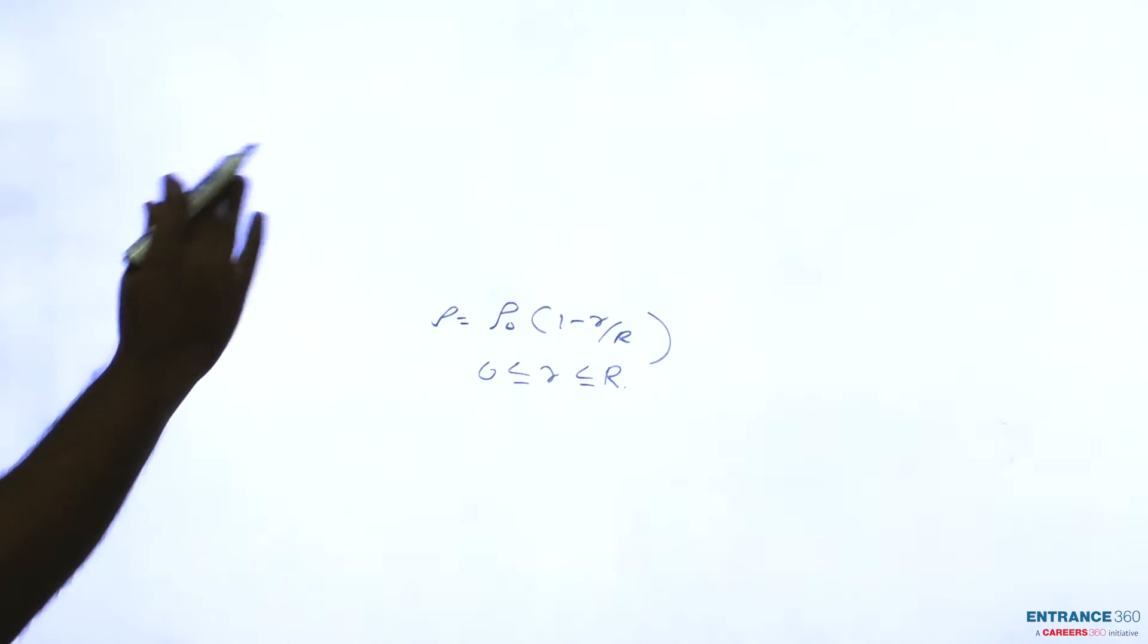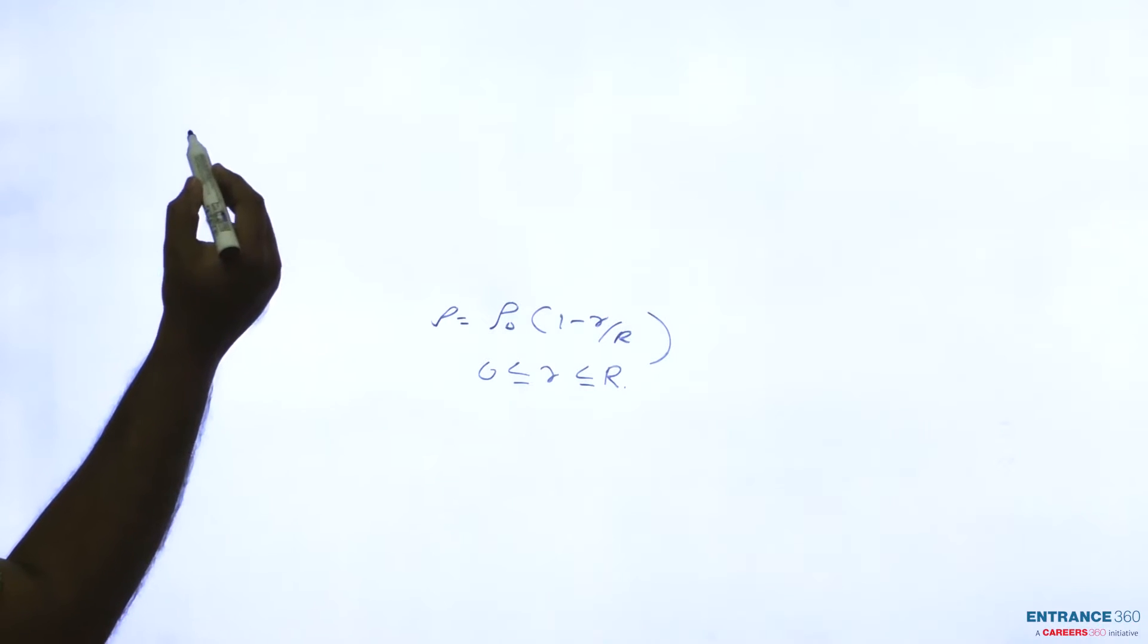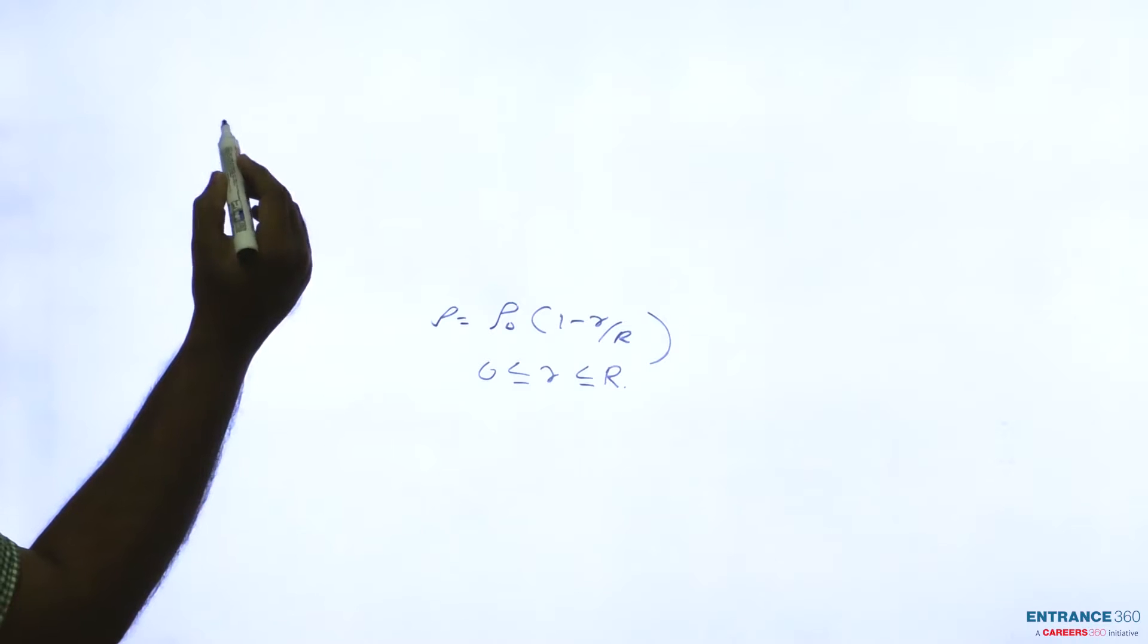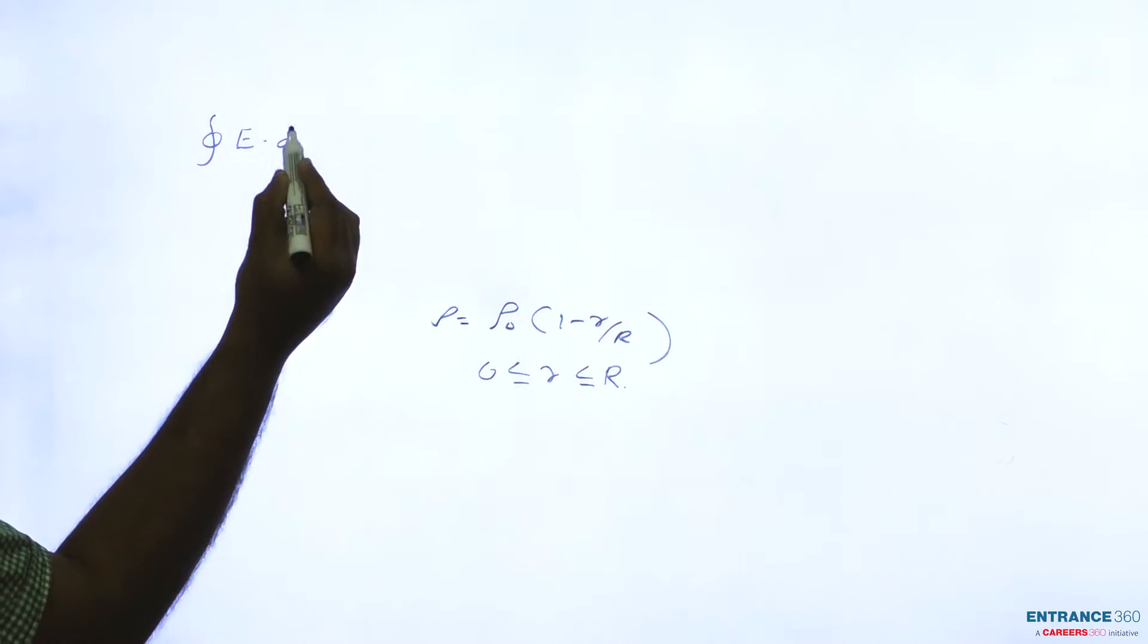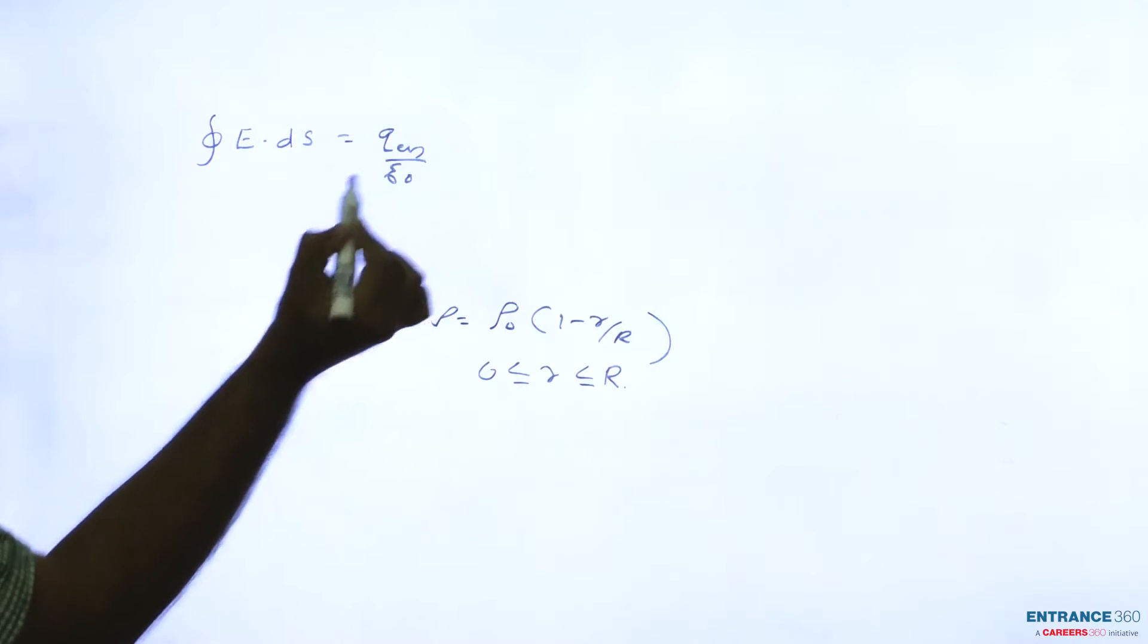To find the value of electric field we can use Gauss's Law. Gauss's Law says that flux phi equals surface integral of E dot dS, which equals q enclosed by epsilon_0.